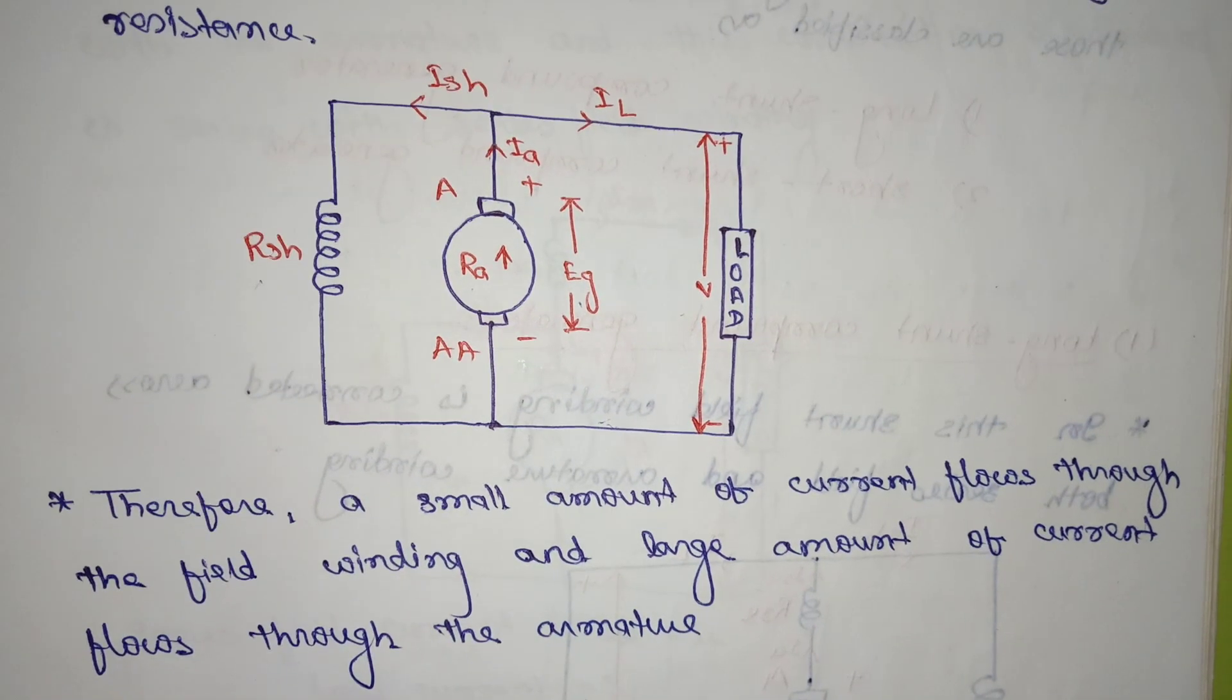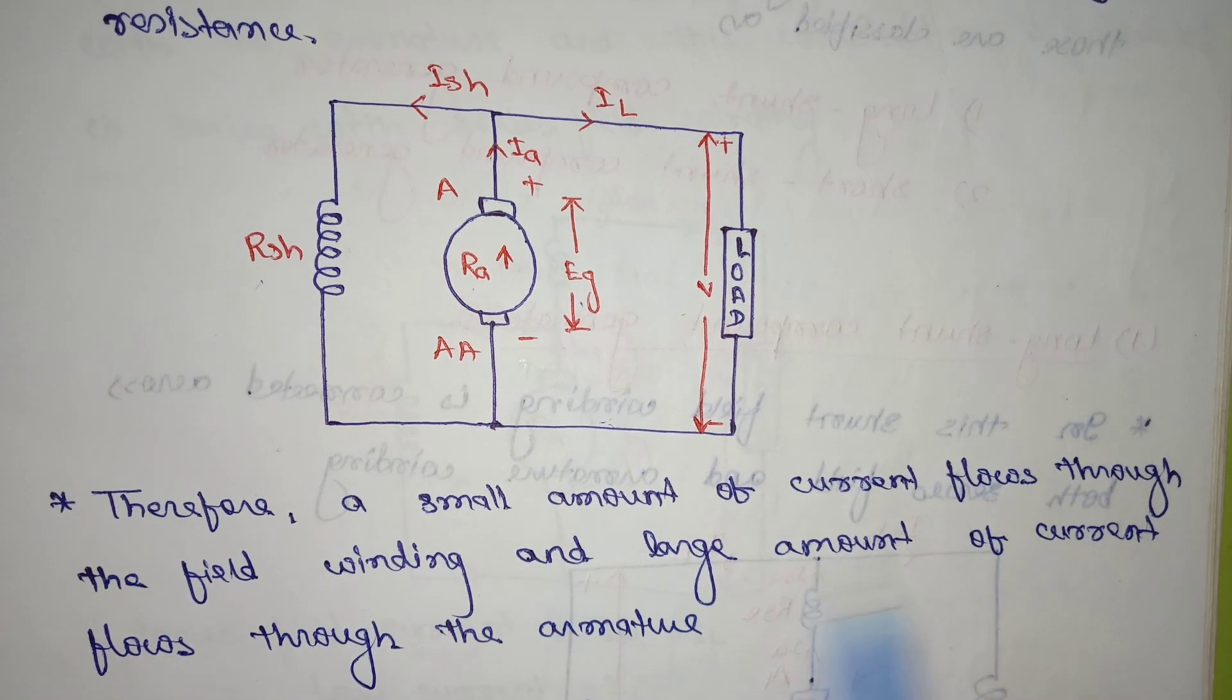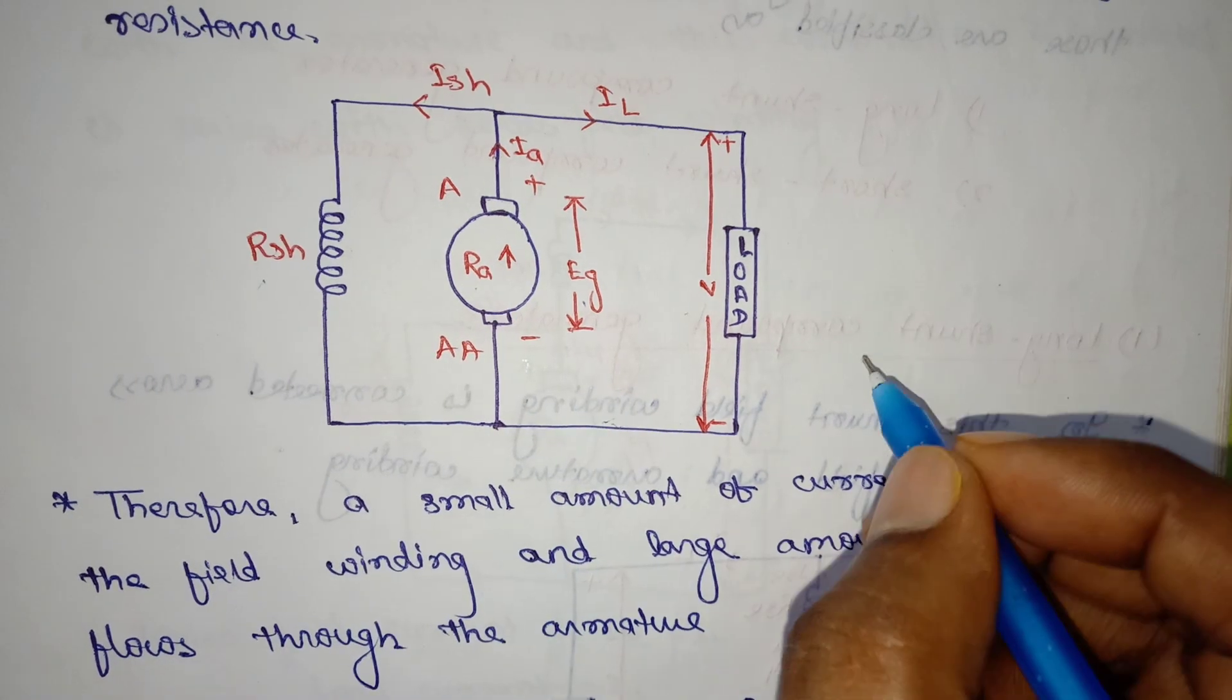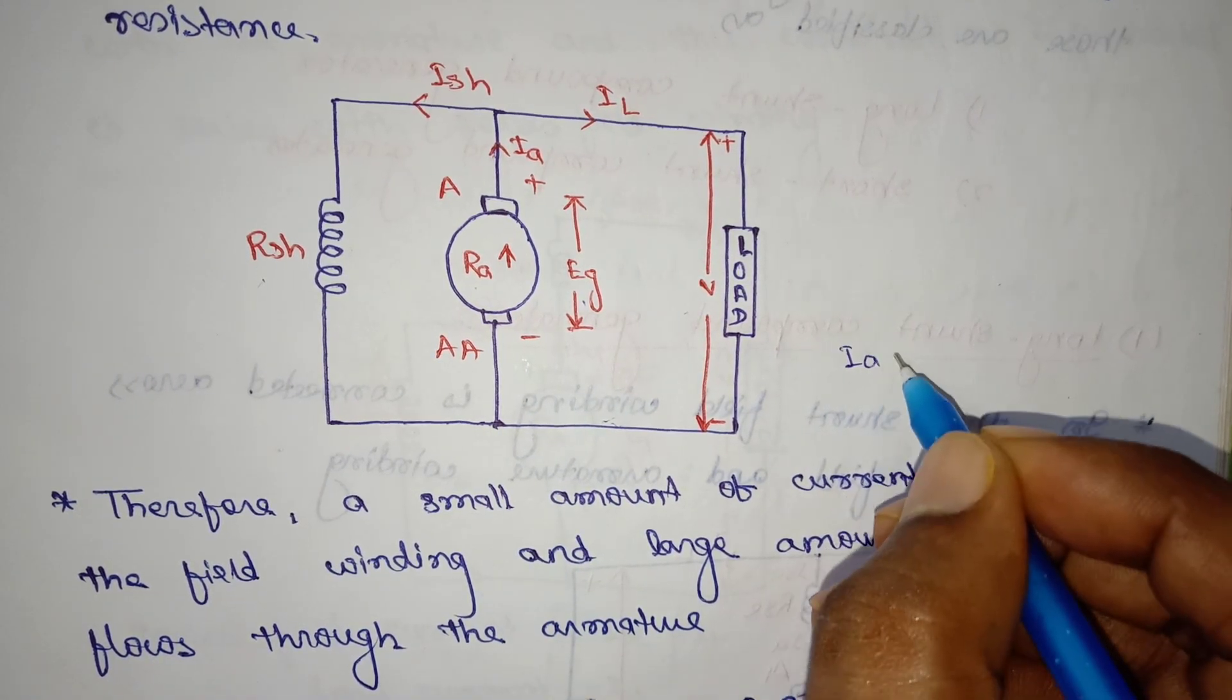Therefore, a small amount of current flows through the field winding and a large amount of current flows through the armature. So, Ia is equal to Il plus Ish.